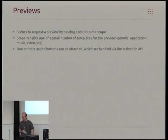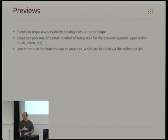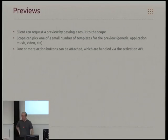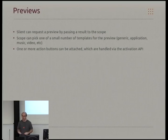The client can request a preview by passing one of the results back to the scope. The scope then basically says that it wants to use a particular preview format and fills in the template with data. We pass the entire result back to the scope when producing a preview, because that means if there's information which the scope gathered when performing the search, you can store that in the result and it will be available when producing a preview, which can speed things up a bit.